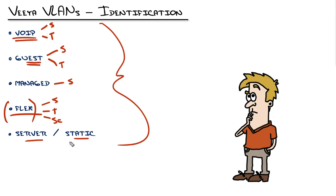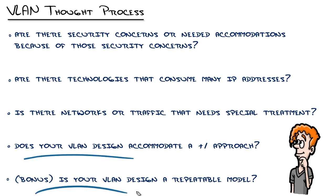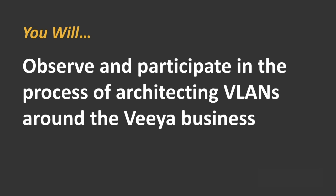The last VLAN I would create is a server VLAN, which I'm also calling static. Because I've thrown managed network devices in there, a nice global way to think about that VLAN is: if it has a static IP address assigned to it, it goes in this VLAN. The other two questions I have here I'll save for the next video about naming and numbering your VLANs. For now, you have observed and participated in the process of architecting VLANs around the VIA business.